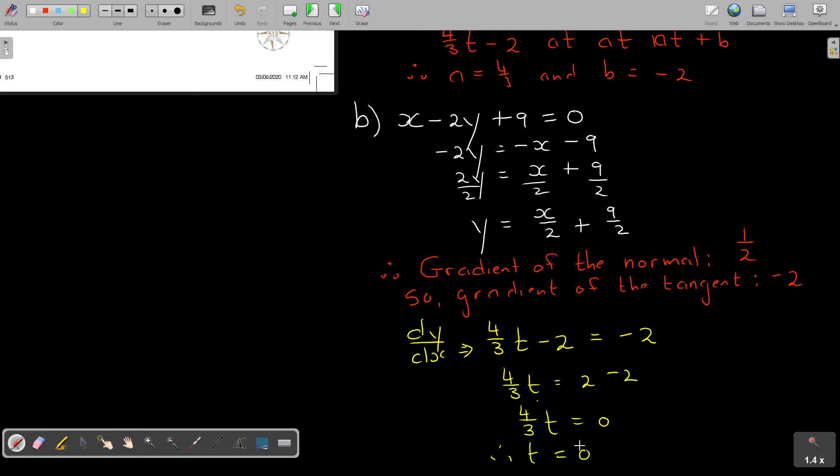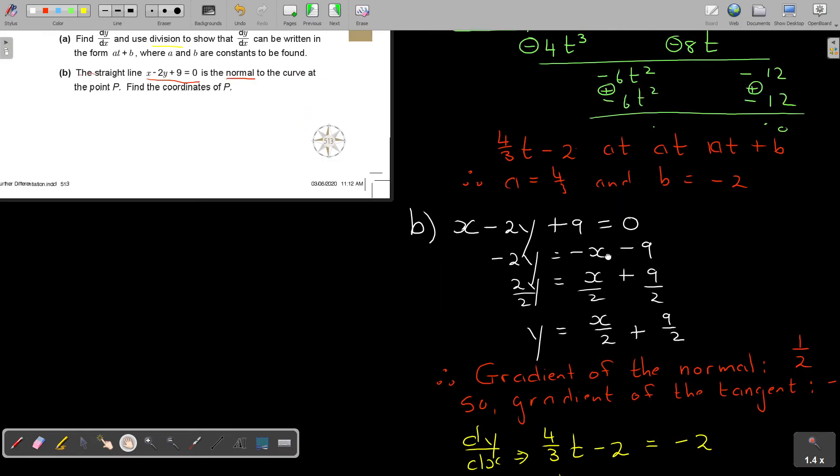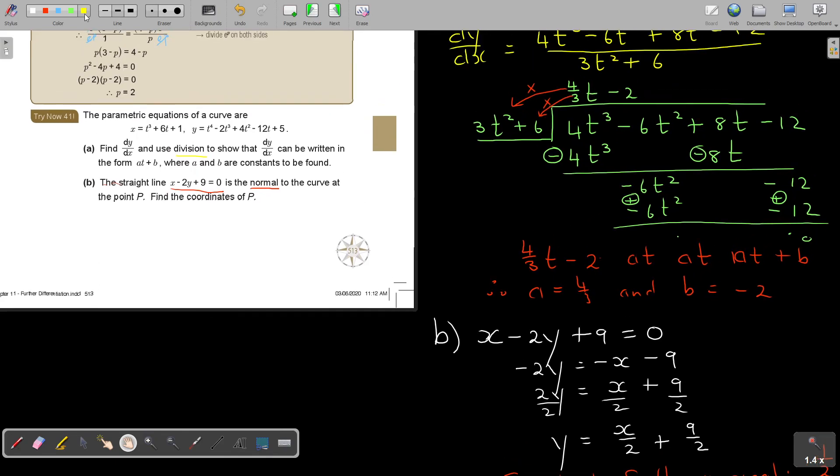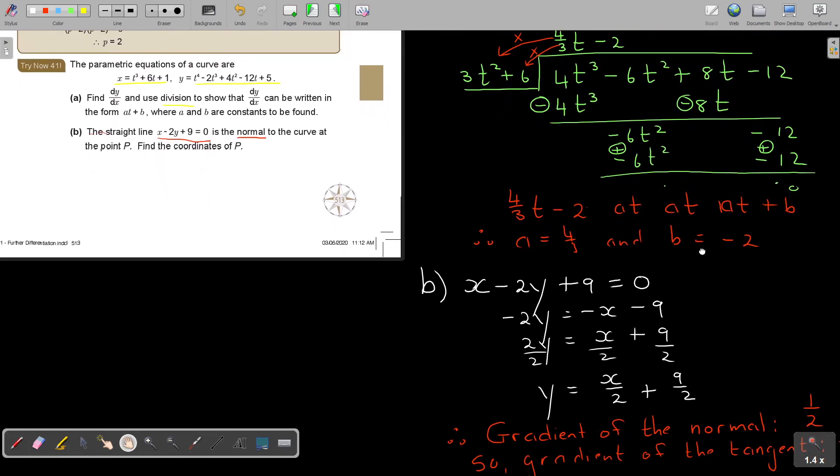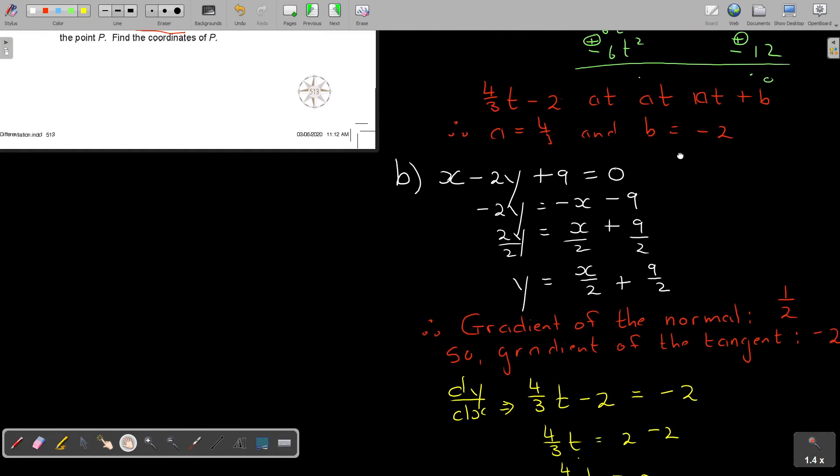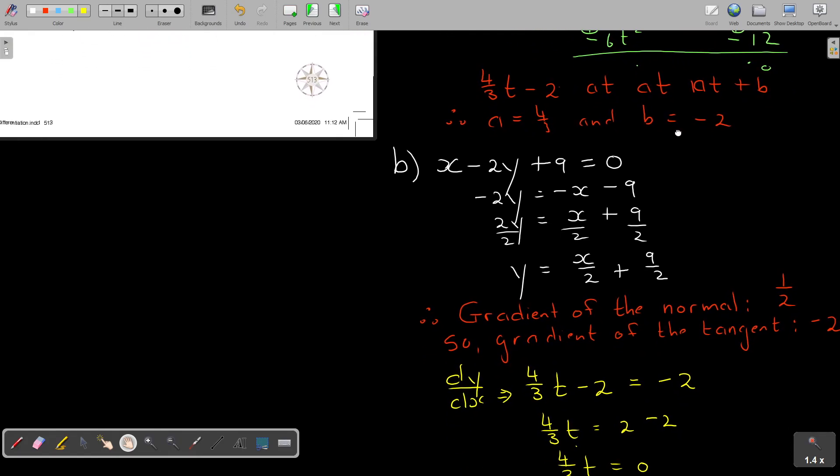Now, don't forget, that this question states, find dy and use division to show that dy can be written in that form. So I'm going to use that form because I have also a gradient there. So, basically, I'm going to now say the other form I was writing it was that 4 over 3t minus 2.